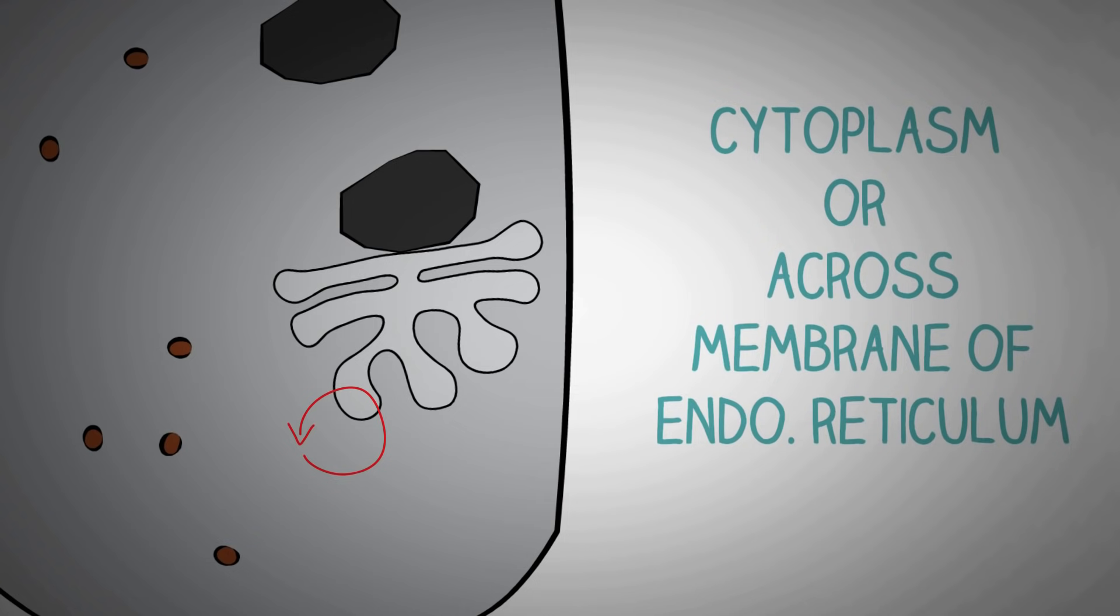What happens is that when the ribosomes bind to the mRNA, this whole complex then attaches to the endoplasmic reticulum. The new protein is synthesized and released into the endoplasmic reticulum. This protein can be stored inside the endoplasmic reticulum or released in the future or it can also be secreted immediately.